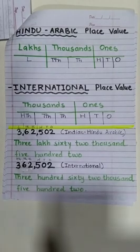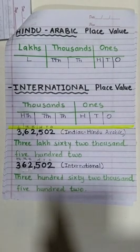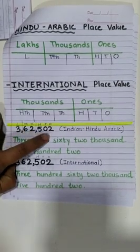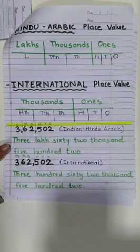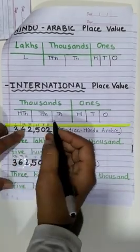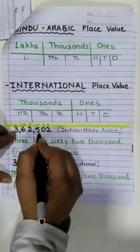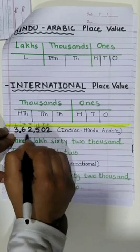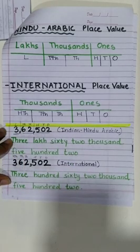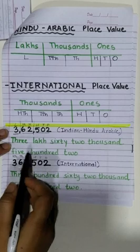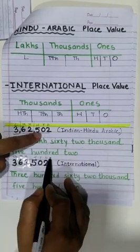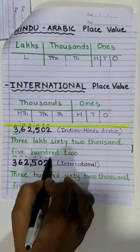Let me explain this to you with the help of an example. Let us consider a 6 digit number 362,502. According to Hindu-Arabic number system, we will divide this in 3 columns: lakhs, thousands, and ones. So the number will be called 3,62,502 according to Hindu-Arabic number system.